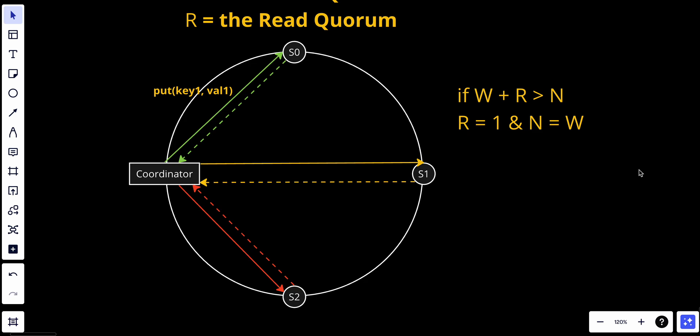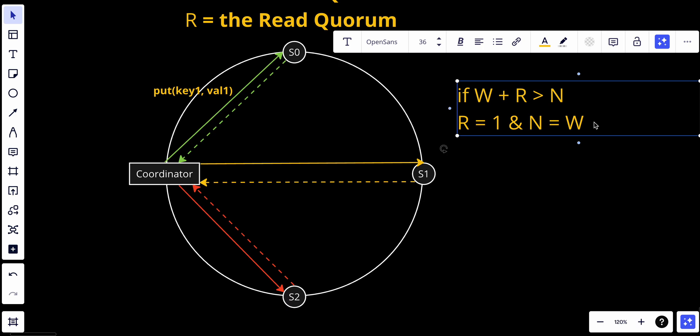If R equals one and W equals N, the system is optimized for fast read. If W equals one and R equals N, the system is optimized for fast write. If W plus R is less than or equals N, strong consistency is not guaranteed but we have super low latency. So depending on the requirement, we can tune the values of W and R and N to achieve the desired level of consistency that we need.